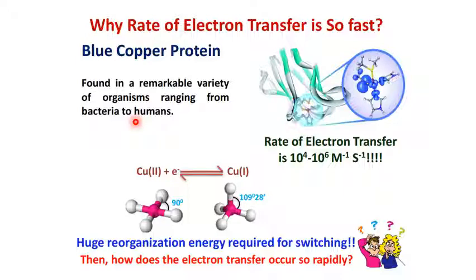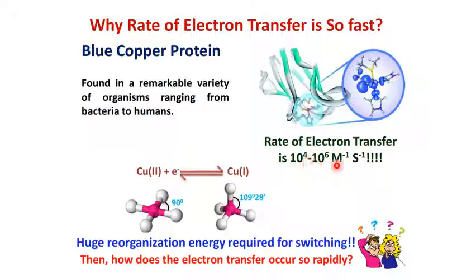One example I will talk about is plastocyanin. When copper 2 is reduced to copper 1, the geometry changes from square planar to tetrahedral. As you can see from this pictorial, a huge reorganization energy is required for this switching. However, in biology this kind of transformation takes place effortlessly — the rate of electron transfer is 10⁴ to 10⁶ M⁻¹s⁻¹. In synthetic models, this copper 2 to copper 1 conversion requires high reorganization energy and a huge amount of energy must be supplied.